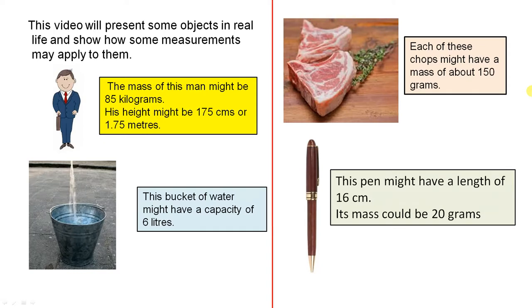Each of these chops might have a mass of about 150 grams. I'm sure you've seen steaks, for example, which have a mass of 300 or 400 grams. They're quite large.